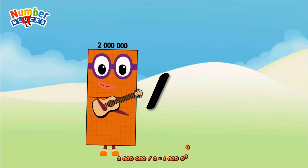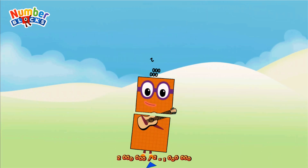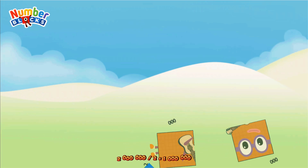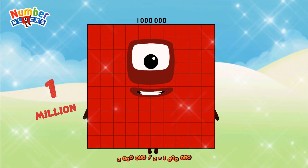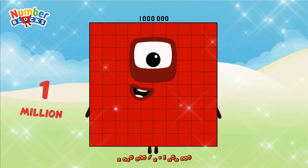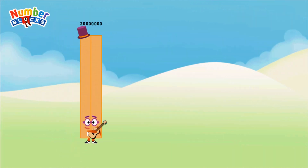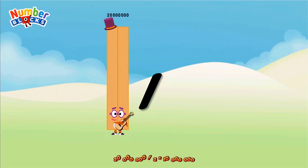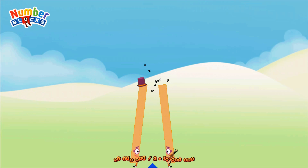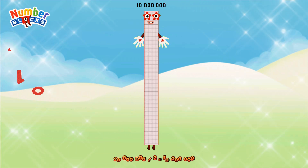Two million divided by two equals one million. Twenty million divided by two equals ten million.